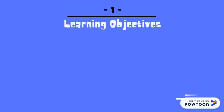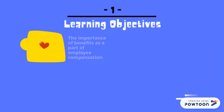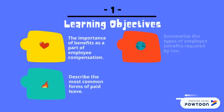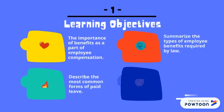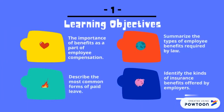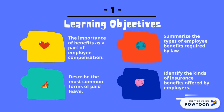After watching and discussing this chapter, you need to know: first, the importance of benefits as part of employee compensation; second, summarize the types of employee benefits required by law; and third, describe the most common forms of paid leave.